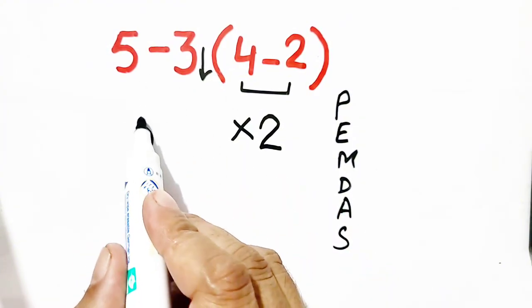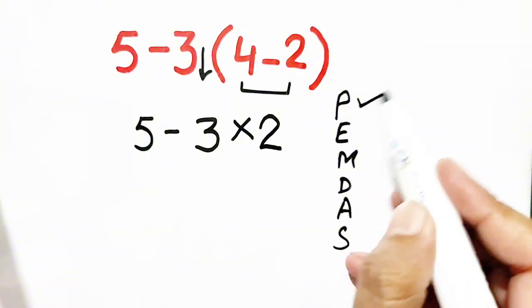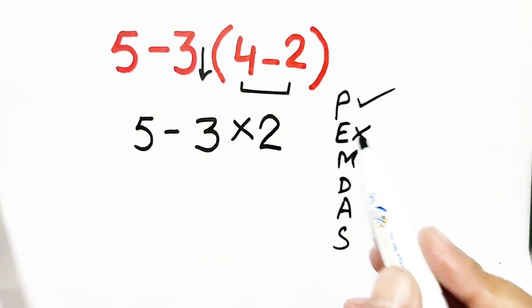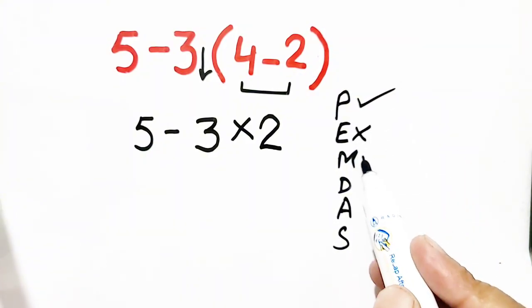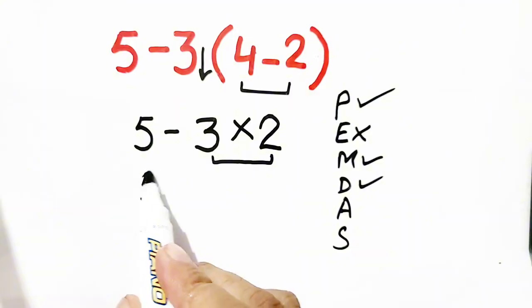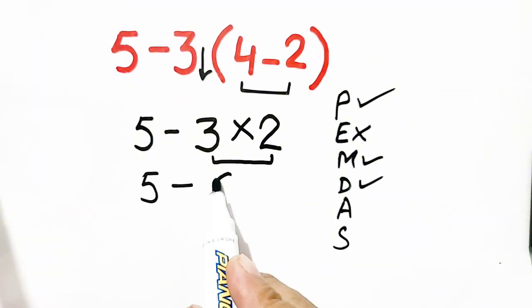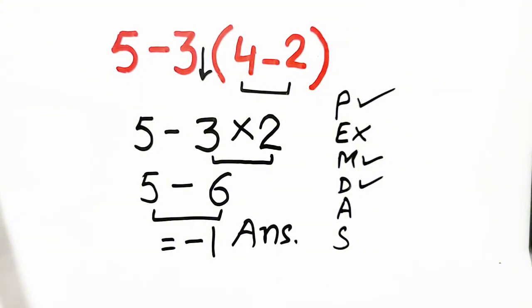Now if you see the order, we have solved parenthesis, exponent is absent, then multiplication and division. So we have to solve multiplication. We will get 5 minus 3 times 2, which will be equal to 6. So 5 minus 6 will be equal to minus 1. Hence, minus 1 will be our answer.